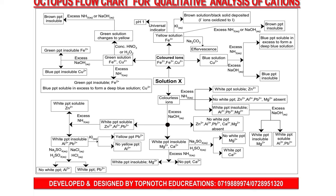We start by looking at a scenario involving solution X. In this solution, cations are divided into two main groups: colored ions and colorless ions. Assume it was a solid X that dissolved in water to form a colorless solution. We'll start by looking at colorless solutions and what reactions can be added to differentiate the colorless ions.